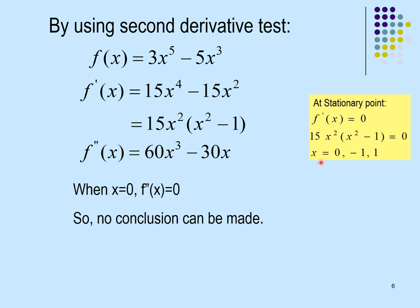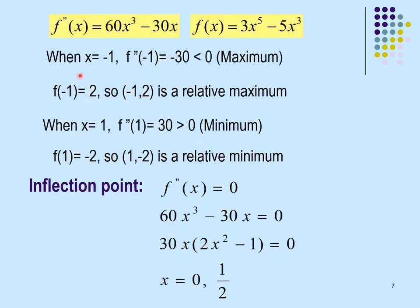Next, find the inflection points by setting the second derivative equal to 0. This gives x = 0 and x = 1/2, so we have two inflection points. To check concavity, we define intervals using the critical values x = −1 and x = 1, with inflection points included: (−1, 0), (0, 1/2), and (1/2, 1).